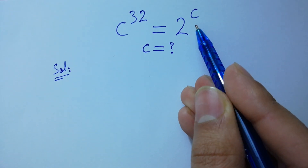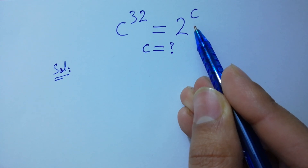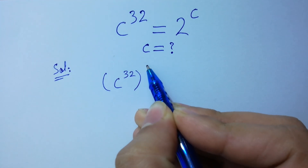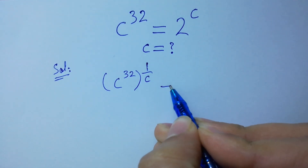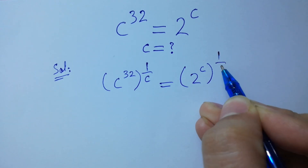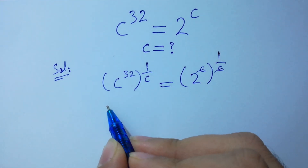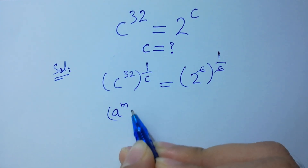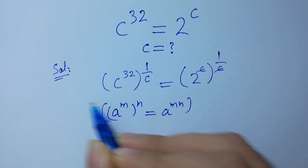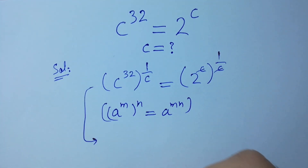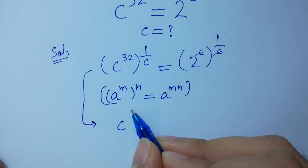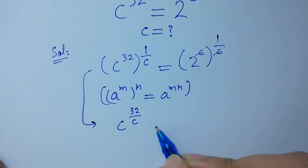To get rid of this C, take power 1 over C on both sides. So C to the power 32, to the whole power 1 over C, equals 2 to the power C, to the whole power 1 over C. C and C will be cancelled. Since A to the power M to the whole power N equals A to the power MN, we have C to the power 32 over C equal to 2.